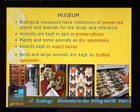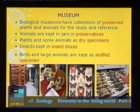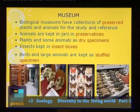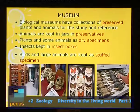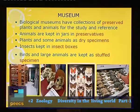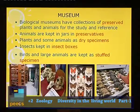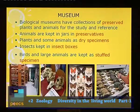Biological museums have collections of preserved plants and animals for study and reference. Animals are kept in jars in chemical preservatives. Plant specimens and animals are stored as dry specimens. Insects are kept in insect boxes. Birds and large animals are kept as stuffed specimens — internal organs and flesh are removed and cotton is filled inside, a process called stuffing.